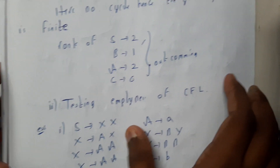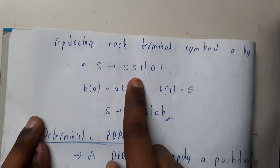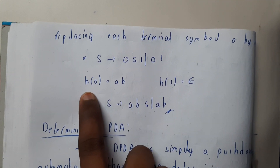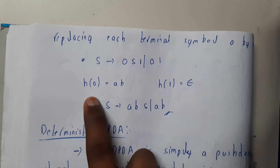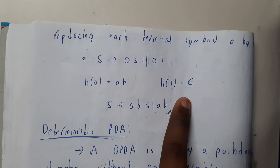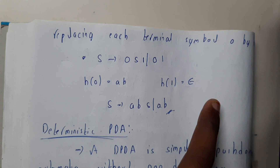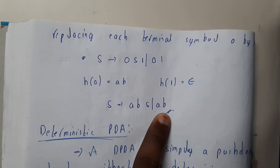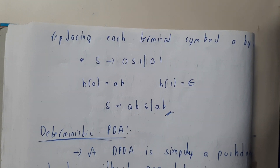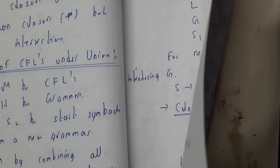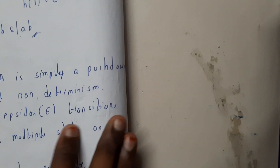Closure under homomorphism — homomorphism means we write shortcuts, replacing some symbols with others. For example, given S tends to 0S1 | 0 | 1, if the homomorphism of 0 is 'ab' and homomorphism of 1 is epsilon, we replace them and form the new grammar. These are the closure properties for CFLs.